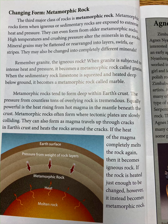The third major class of rocks is metamorphic rock. Metamorphic rocks form when igneous or sedimentary rocks are exposed to extreme heat and pressure. They can even form from older metamorphic rocks. High temperatures and crushing pressure alter the minerals in the rocks. Mineral grains may be flattened or rearranged into layers, swirls, or stripes. They may also be changed into completely different minerals.